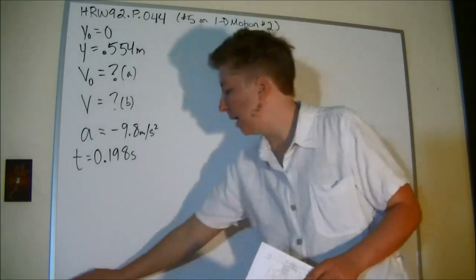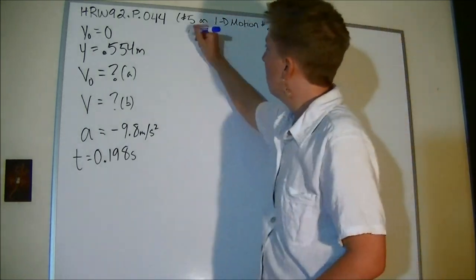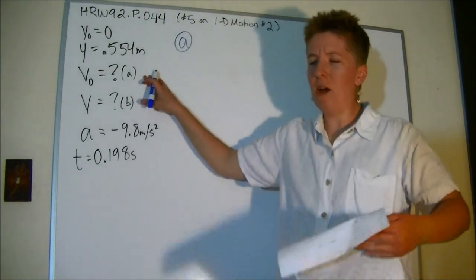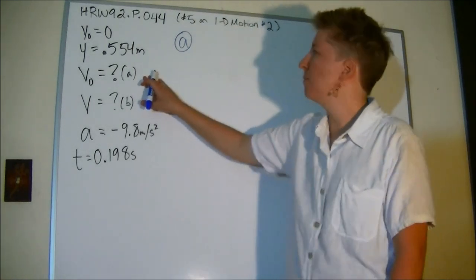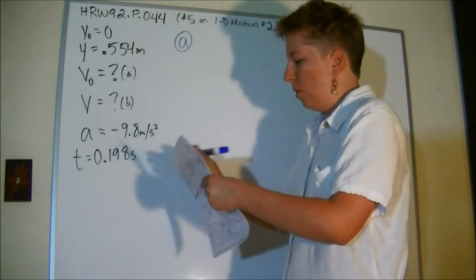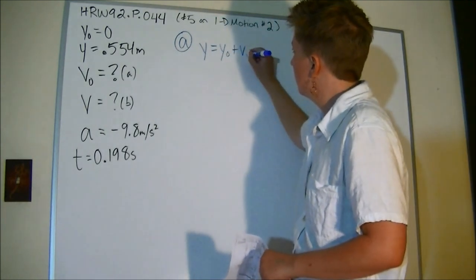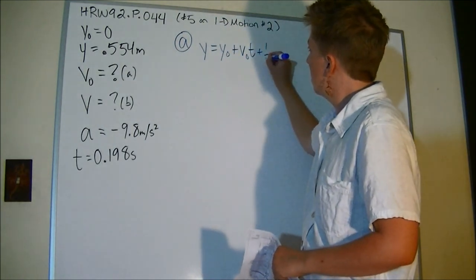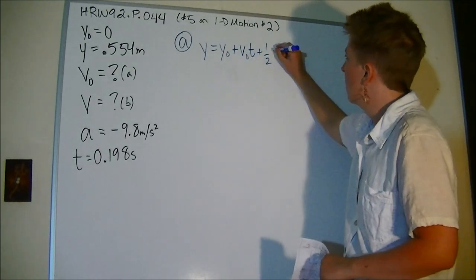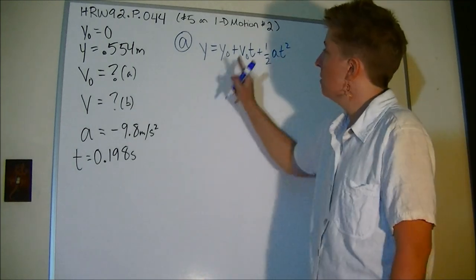Okay, so in part A they want what was the velocity when it jumped off the ground, so that would be its initial velocity. Well, I'm going to use our good old big equation.